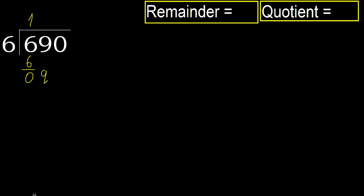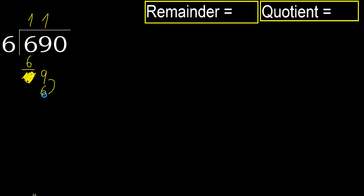Next, eliminate the 0 on this side — bring down 9. 6 multiplied by 2 is 12, which is greater. Multiplied by 1 is 6, which is not greater. 9 minus 6 is 3.